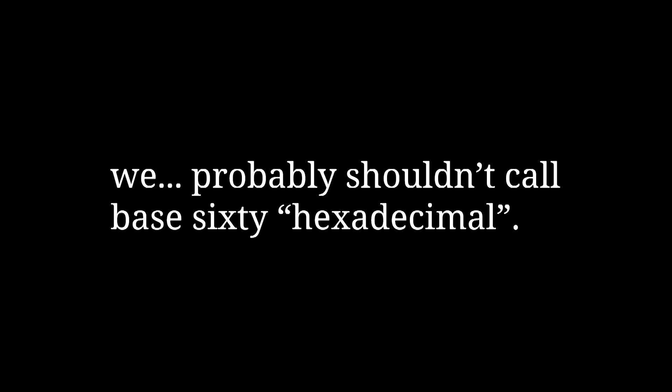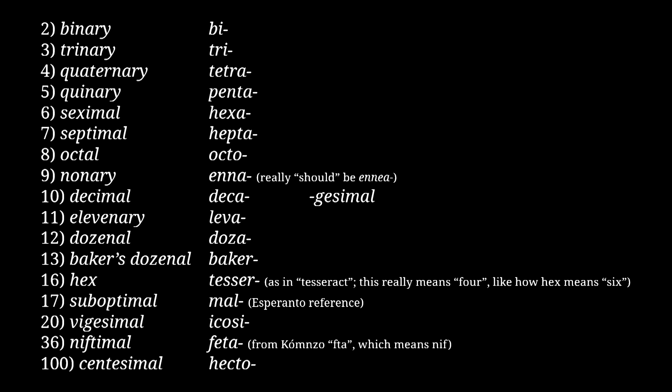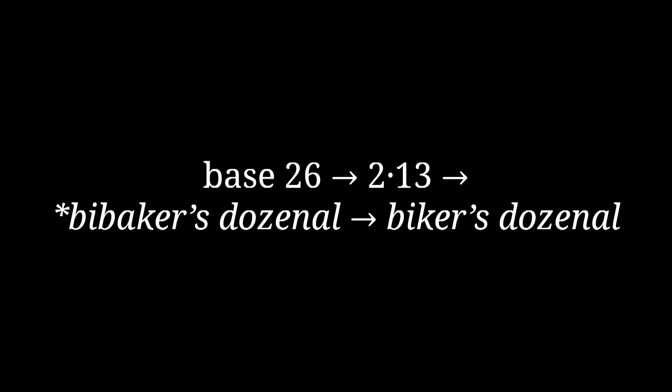Wait — the problem we've just run into is that adding a multiplicative prefix to 'decimal' will sound like you're using the traditional base-naming system to talk about a completely different base. To avoid that, when you put a prefix before 'decimal,' it becomes 'gesimal' instead. So base 60 is hexagesimal, not hexadecimal. The other base that's different when there's a prefix is baker's dozenal. While it's a very good name, it can be cumbersome to add a prefix to it, so when there's a prefix, baker's dozenal gets shortened to just 'ker's dozenal.' For example, the Excel column numbering system, base 26 — two baker's dozen — is called biker's dozenal.